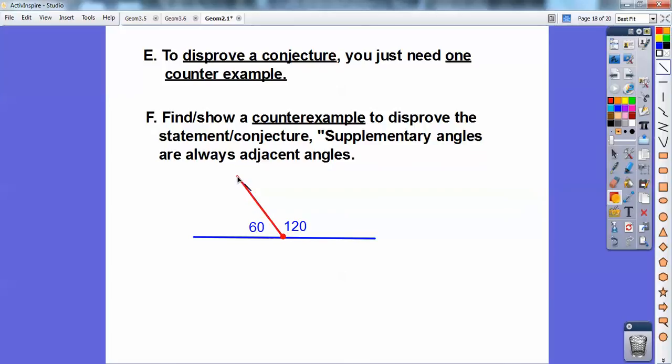But not all supplementary angles have to be adjacent angles like these ones, see? So I just need one example. Here's an example right here. These guys are supplementary angles. 45 plus 135 equals 180, so they're supplementary, but they're not adjacent because they don't share a vertex right there. Their vertexes are way apart, and they don't even share a common side. So there's an example that disproves that conjecture.